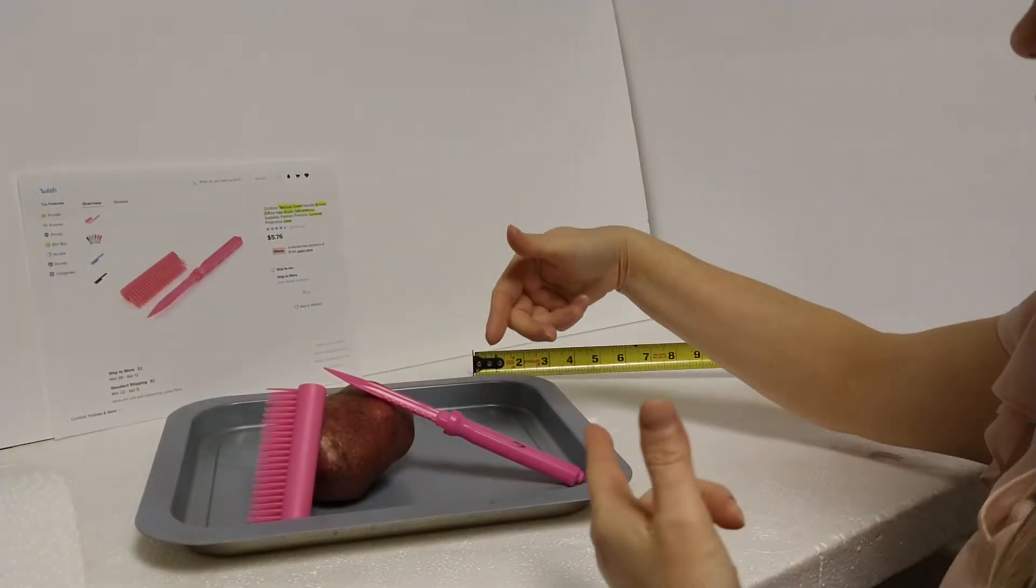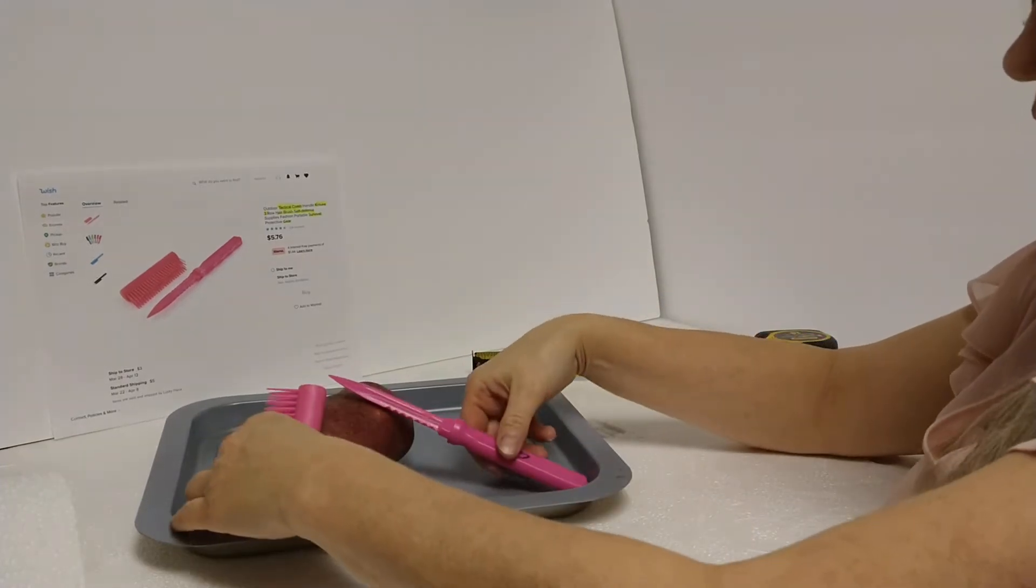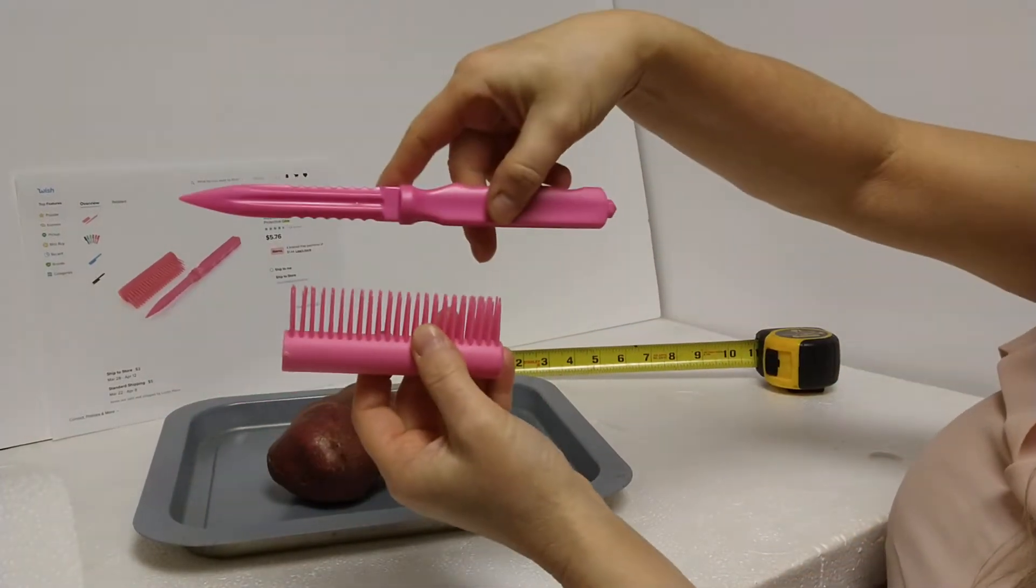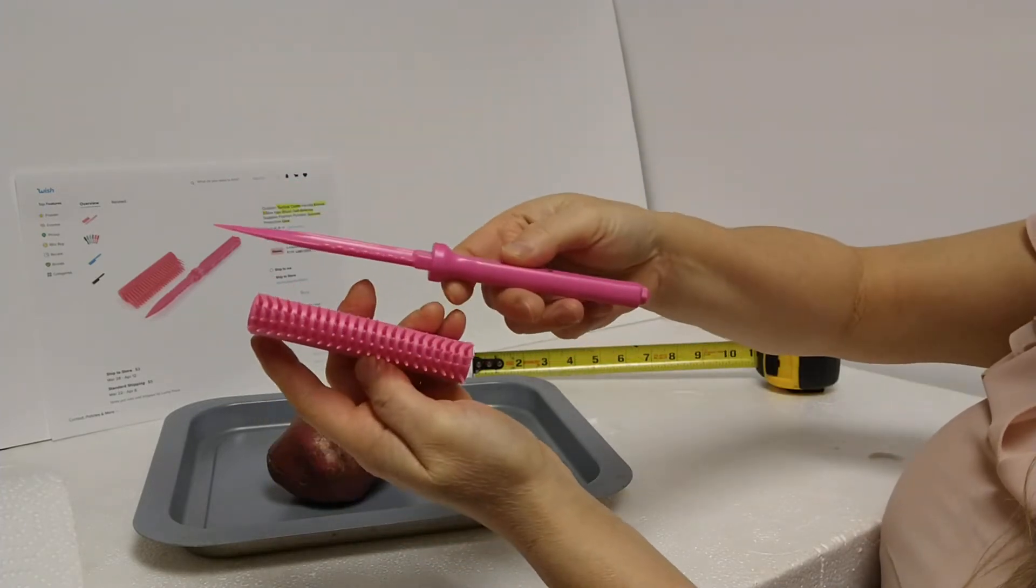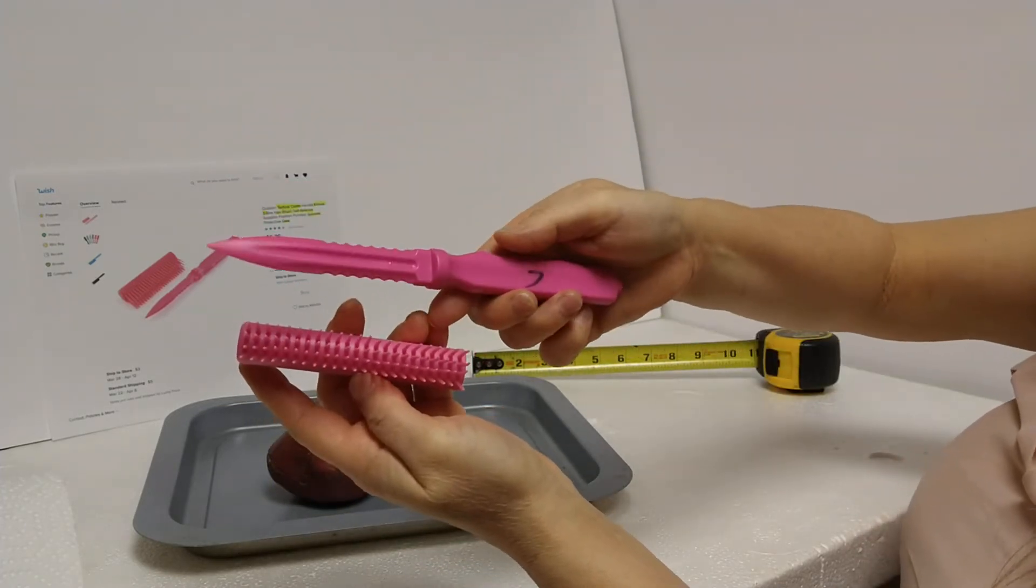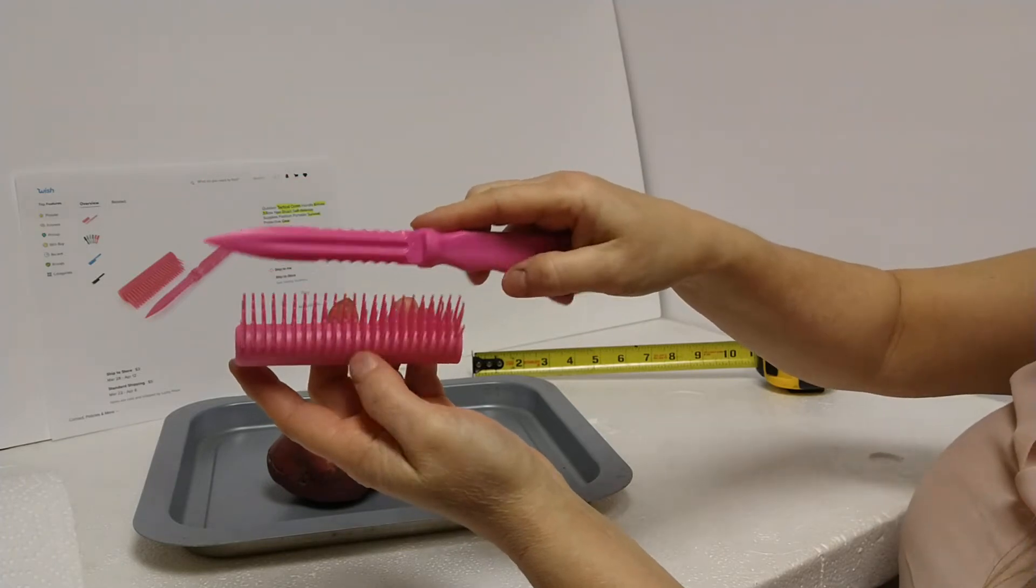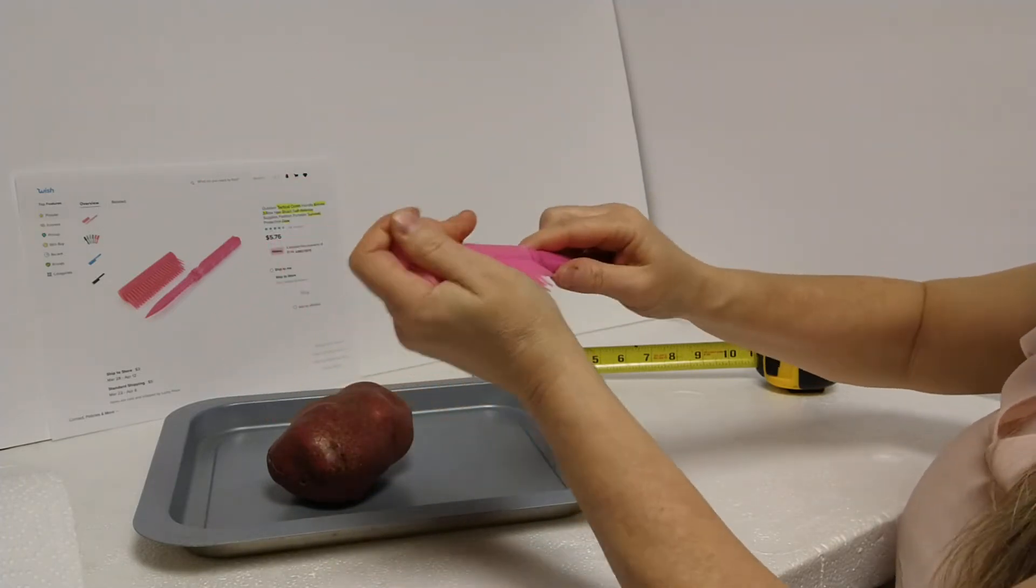I purchased this from Wish. This is a two-piece tactical gear - brush, knife, protective gear. And we'll show you how this works.